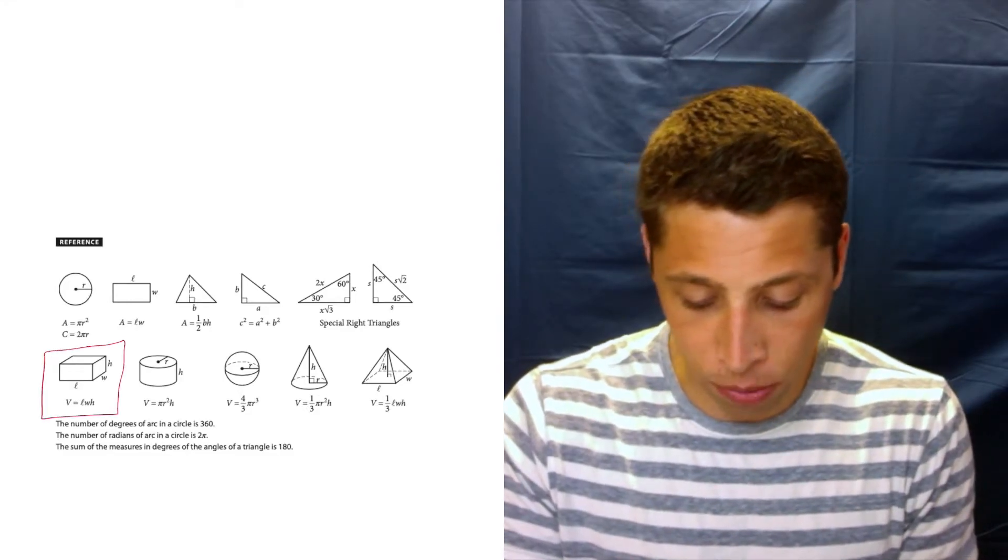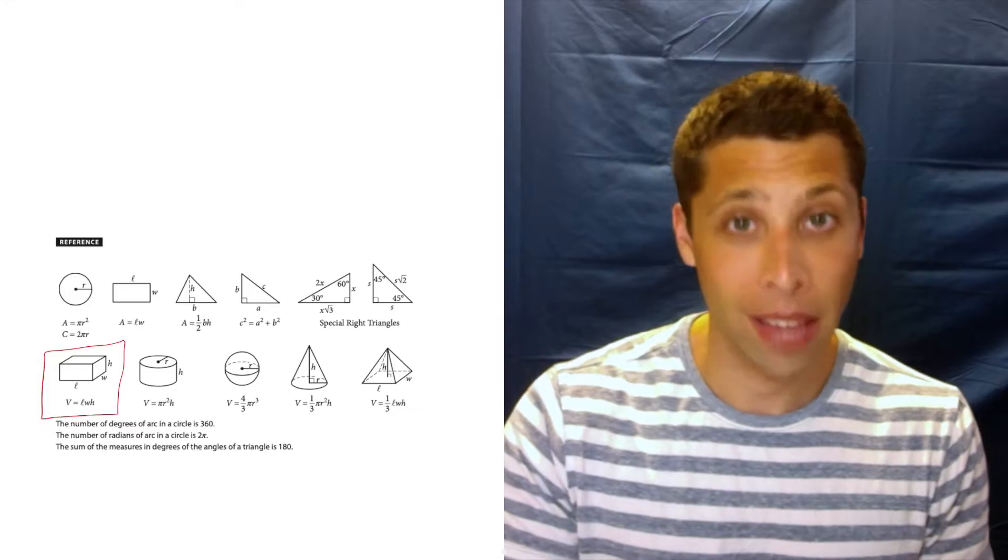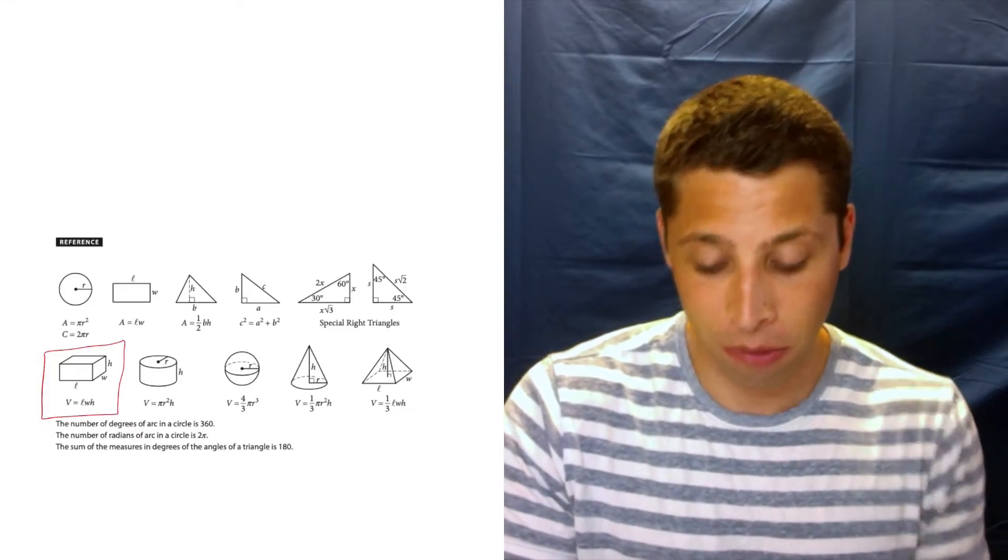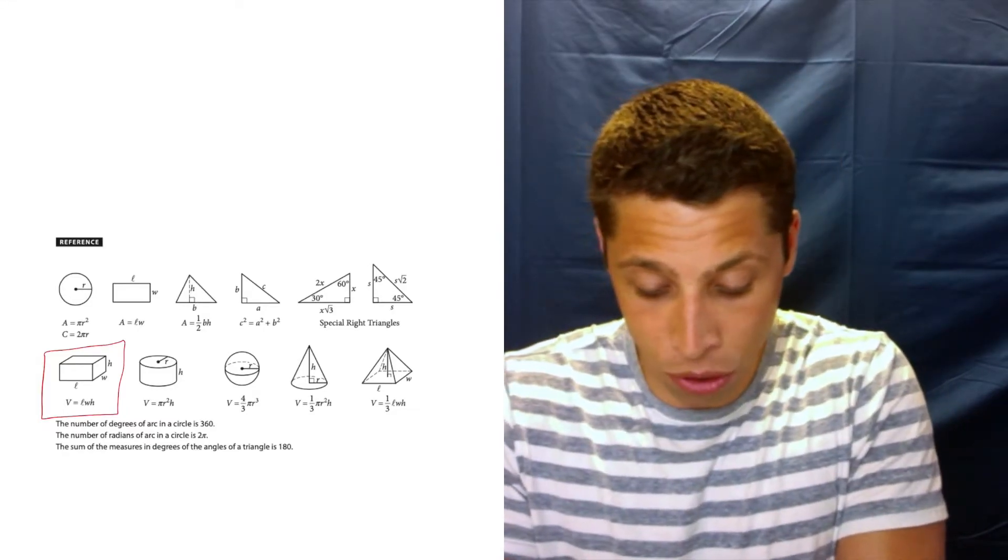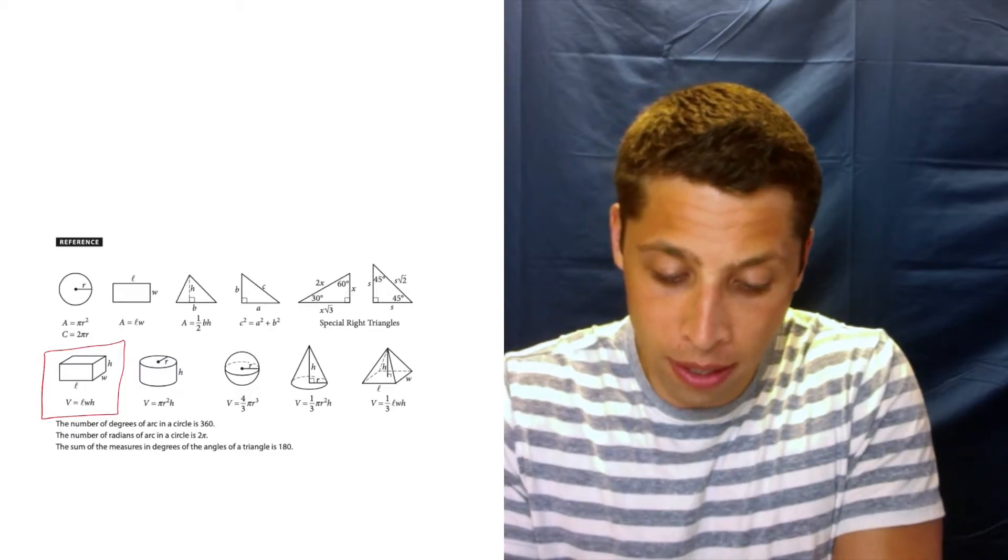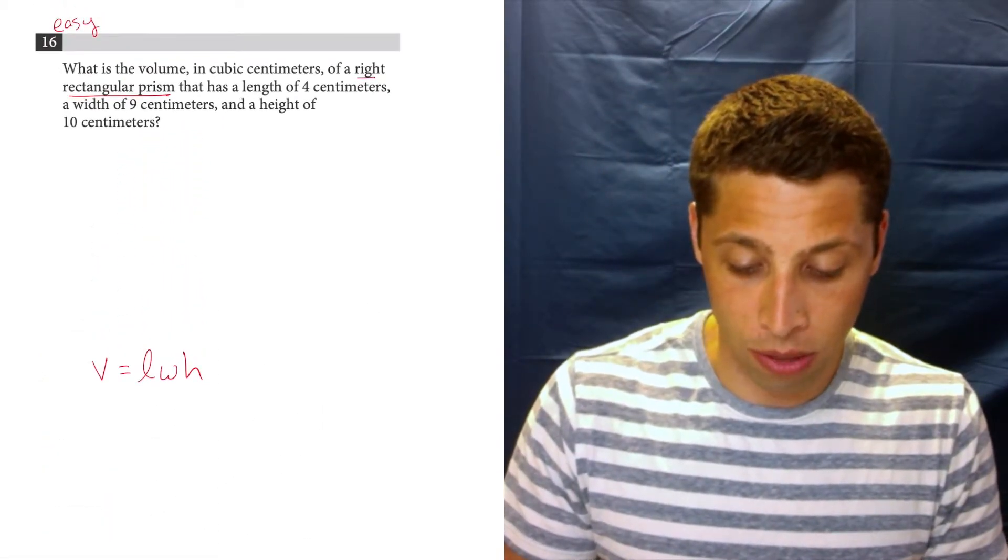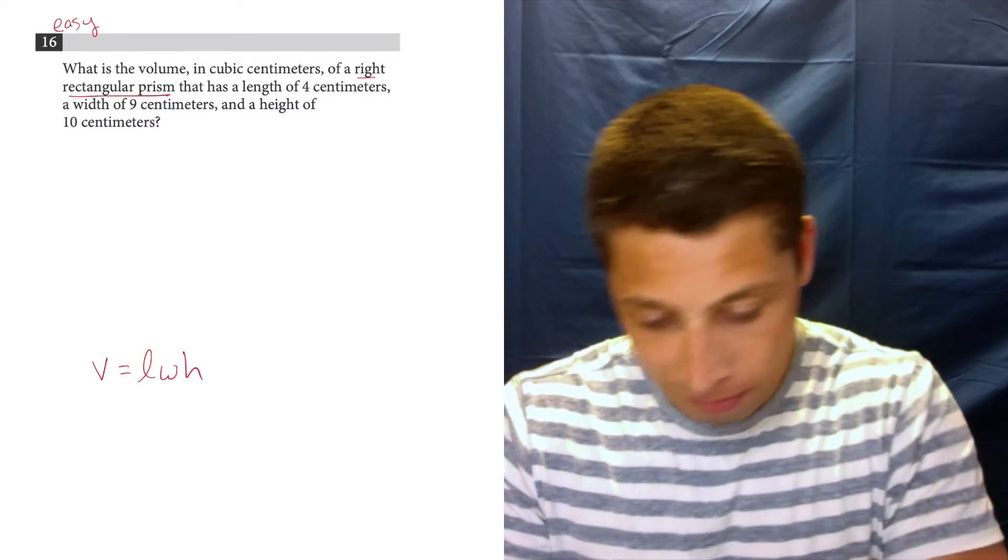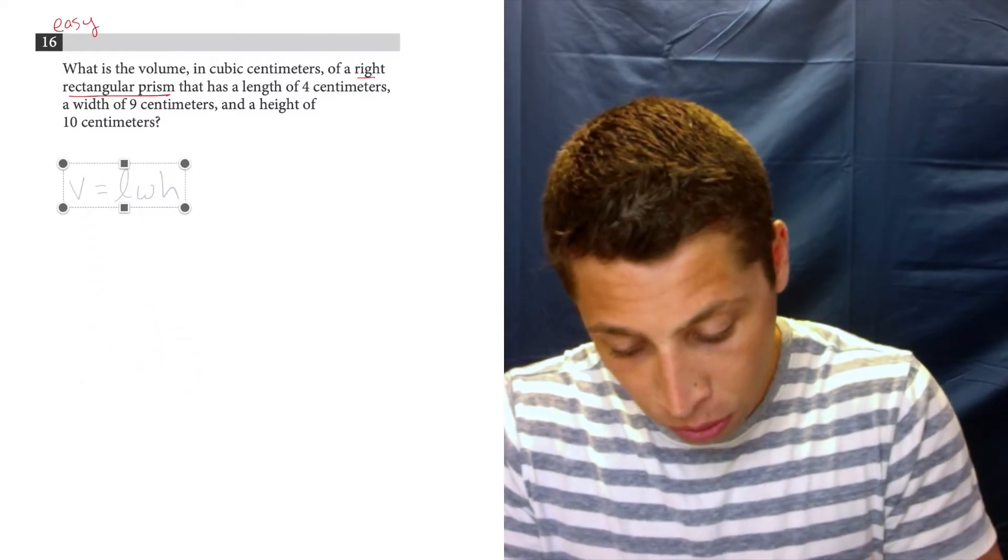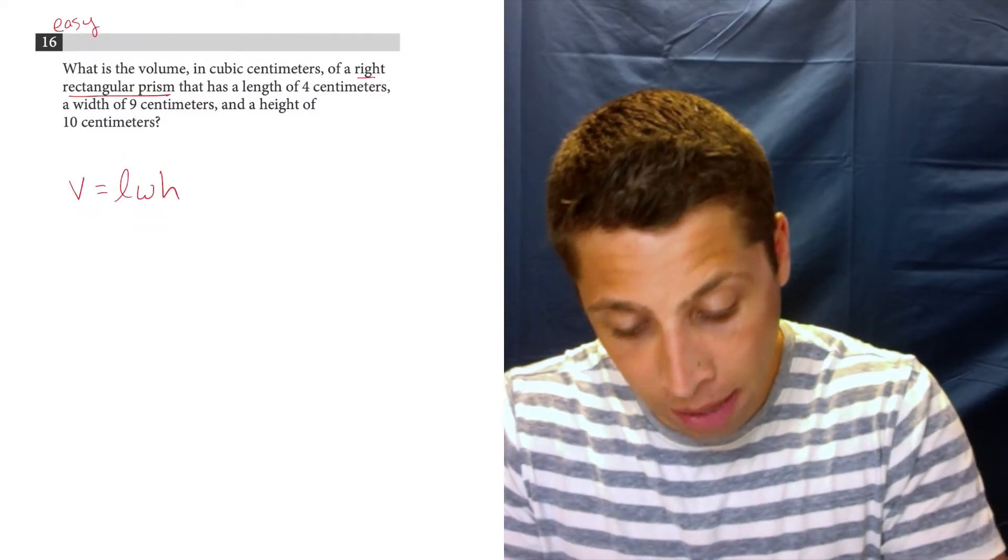And sure enough, we have a right rectangular prism and they give us the volume formula. So volume is equal to length times width times height. So let's go back to our question and we're just going to use that formula with the information we're given. So let's bring that up to here. Length times width times height.